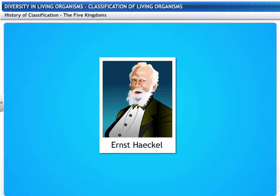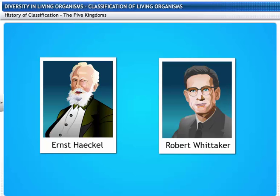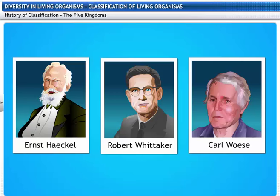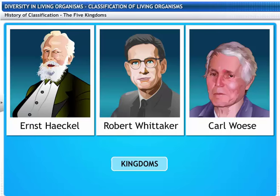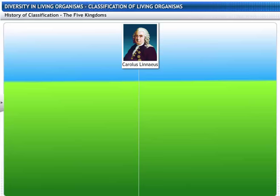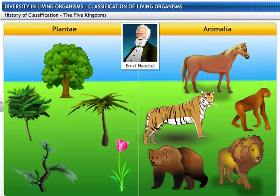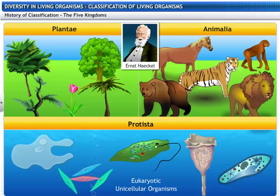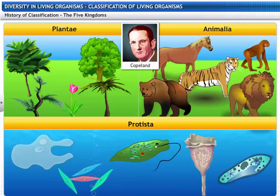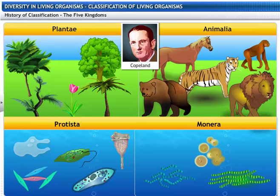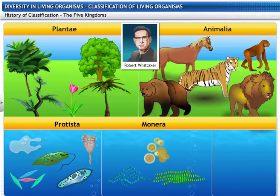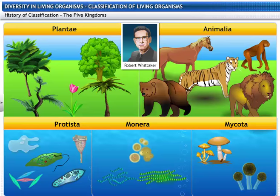Biologists such as Ernst Haeckel, Robert Whittaker, and Carl Woese have tried to classify living organisms into broad categories called kingdoms. Carolus Linnaeus classified all living organisms as Plantae and Animalia. Ernst Haeckel proposed Protista to include eukaryotic unicellular organisms. Copeland introduced Monera to include all prokaryotic organisms. In 1969, Whittaker proposed Mycota to include fungi. This led to a five-kingdom classification proposed by Whittaker, which is still used today.